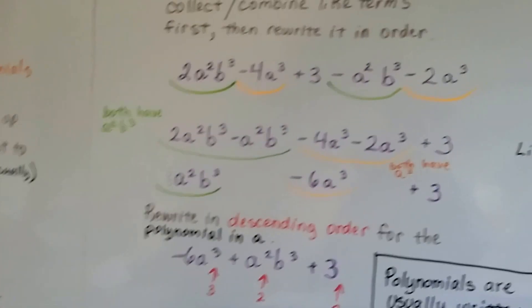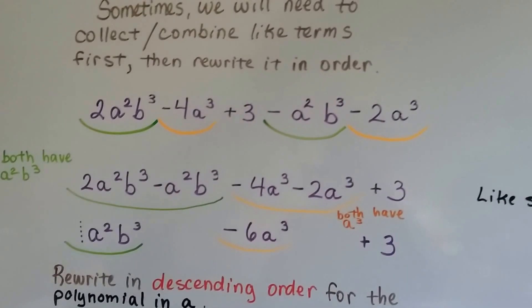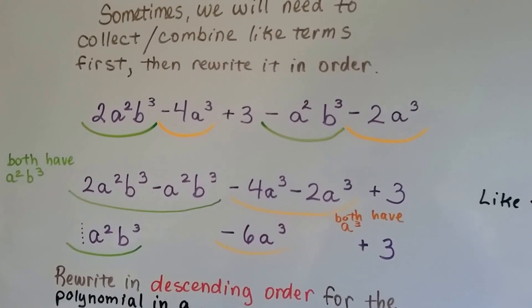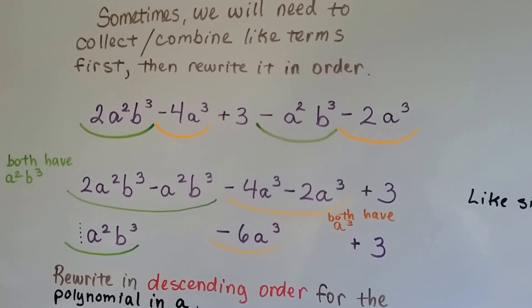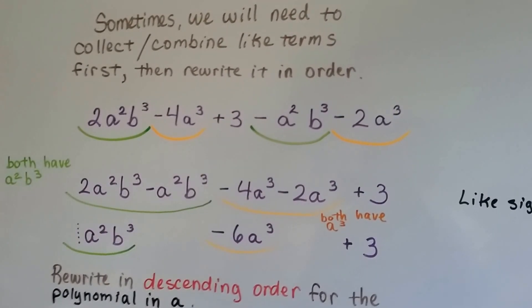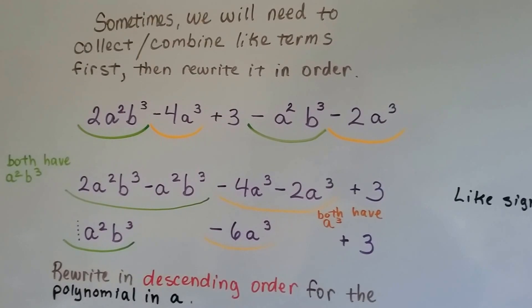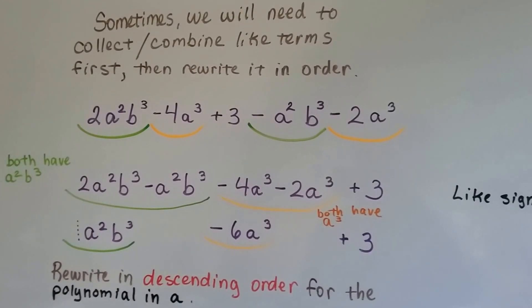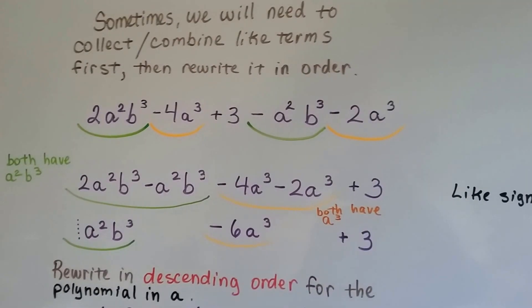Well, sometimes we need to collect combine-like terms first and then rewrite it in order. So I've got my green-like terms, and then I've got my orange-like terms, and that poor little 3 constant is just going to go for the ride, because he has nobody that's like him. So we're just going to add him at the end.